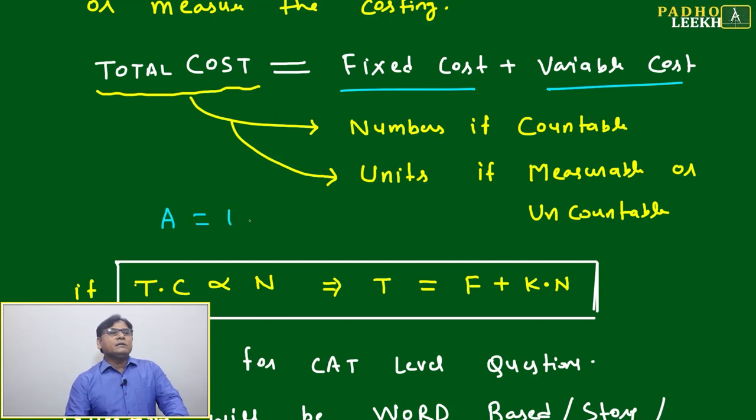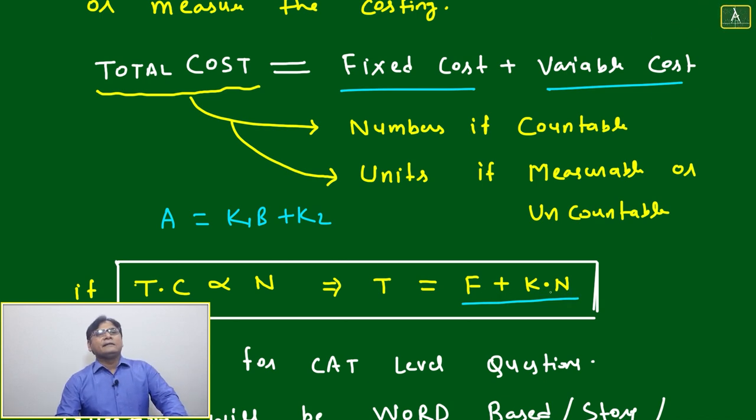That same thing is written here. In place of K2 it is F, and in place of B it is N. So total cost will be equal to fixed cost plus variable cost.